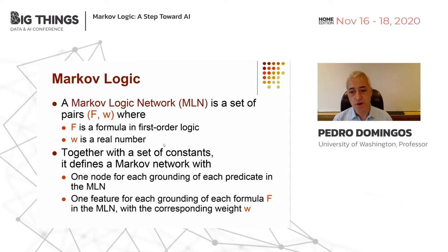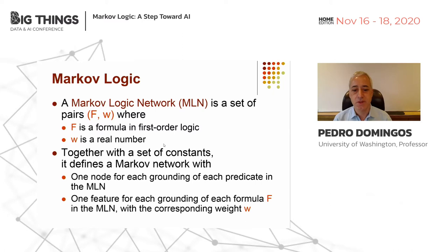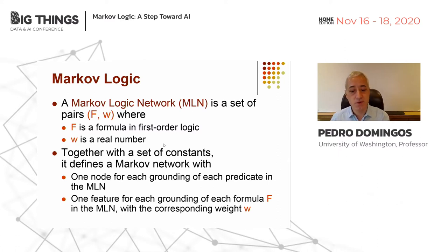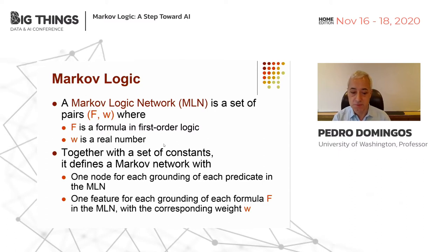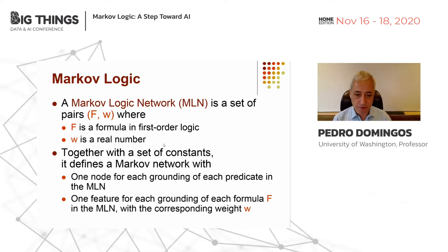A Markov logic network, or MLN for short, is a set of pairs F and W, where F is a formula in ordinary first-order logic with usual syntax, and W is a real number. Together with a set of constants representing objects in the world, a Markov logic network defines a Markov network — an undirected graphical model — with one node for each grounding of each predicate in the MLN. A grounding of a predicate is replacing its variables by constants, so then it talks about specific objects. And one feature for each grounding of each formula in the MLN with a corresponding weight.